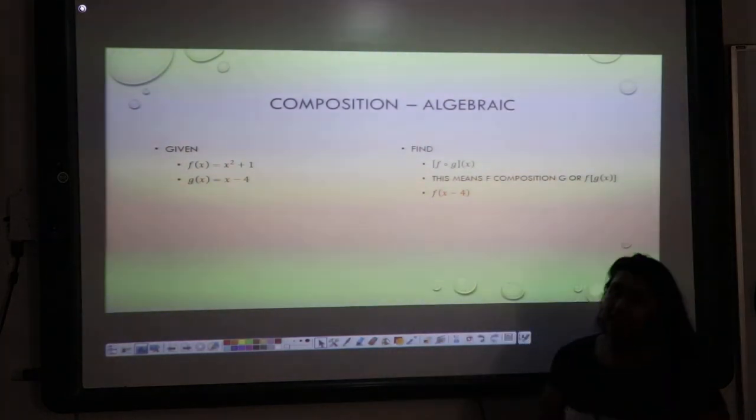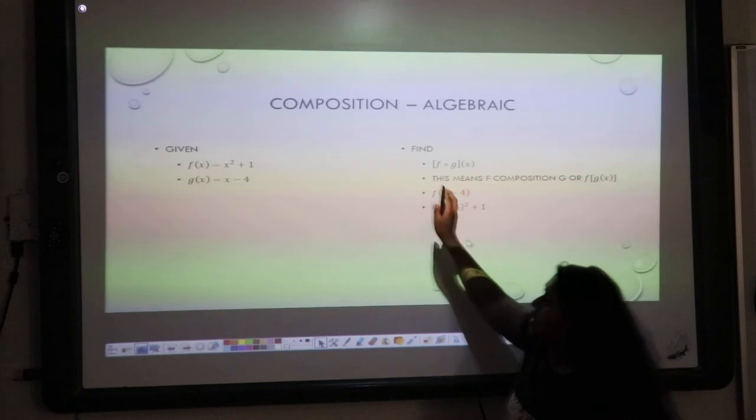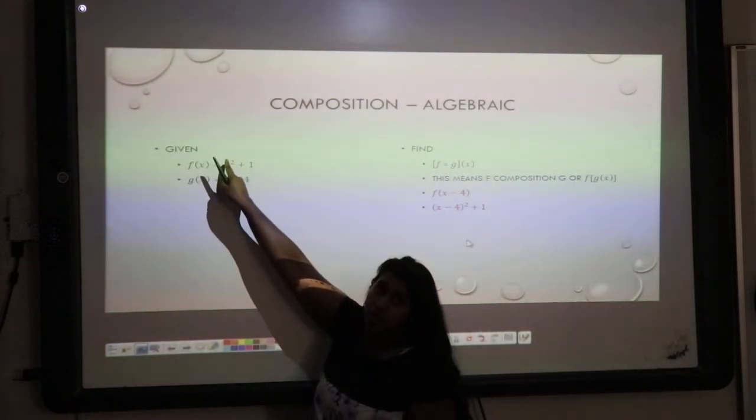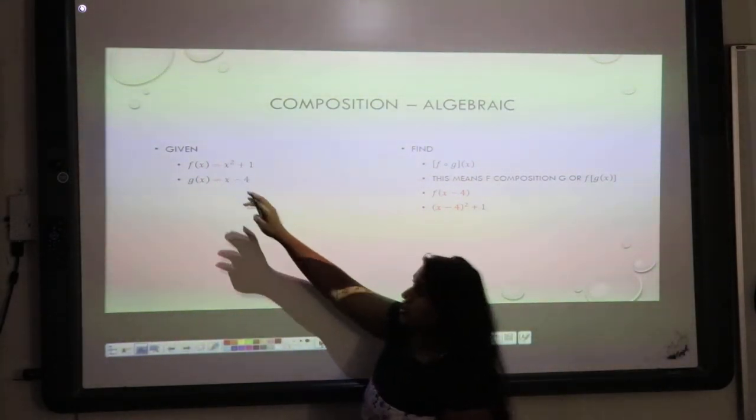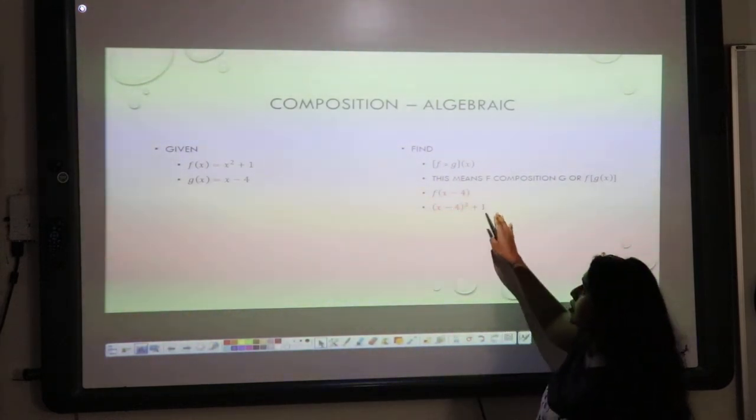I'm going to take that g and place it in the x variable for every one for the f function. So, in this one, we only have one. So, we're going to do x minus 4 squared plus 1. I simplify that. That's a foil.